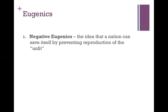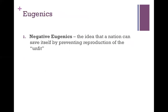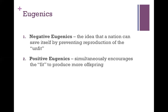Within the eugenics movement, there were two important pieces. One was negative eugenics — the idea that a nation can save itself by preventing the reproduction of the unfit, those with the bad genes. But then there's also positive eugenics, which involves simultaneously encouraging the fit — those with good genes — to produce more offspring. So you want to prevent criminals from reproducing while also getting the so-called good people in society to have more kids, such as by giving them tax breaks for having more children.